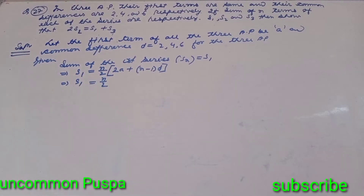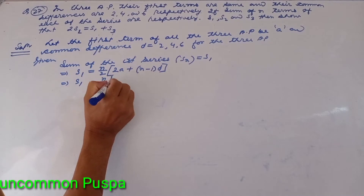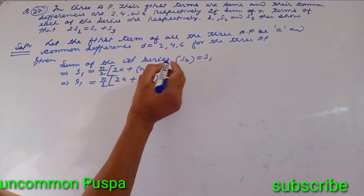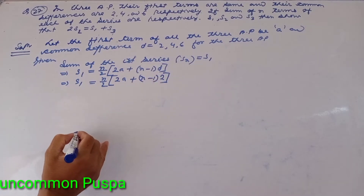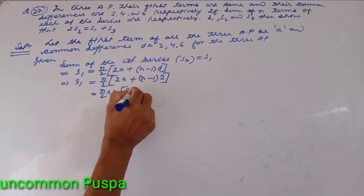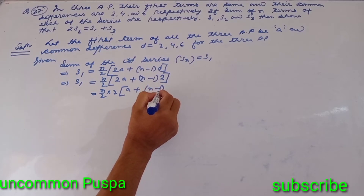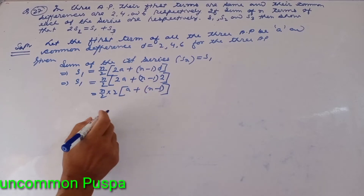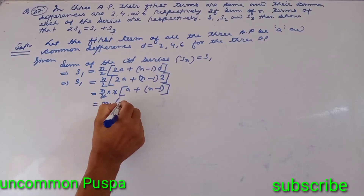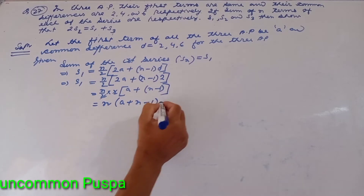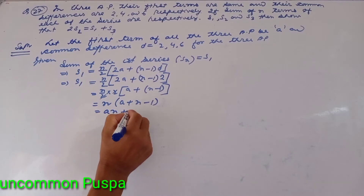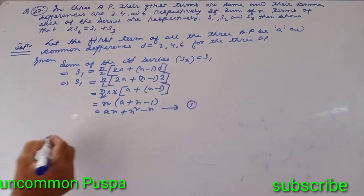Substituting D equals 2: S1 equals n by 2 times (2a plus n minus 1 times 2), which simplifies to n by 2 times (2a plus 2n minus 2), giving us na plus n squared minus n. This is equation number 1.